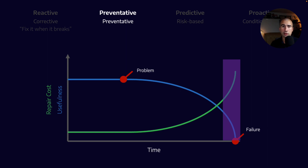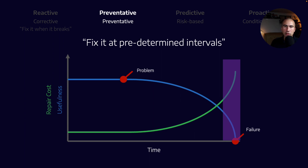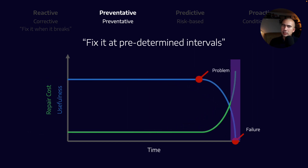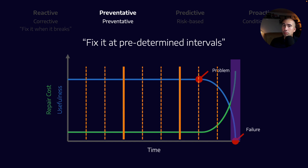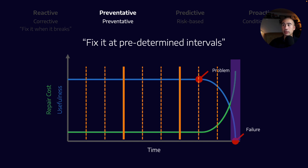Then we move on to preventative maintenance — the definition could be 'I fix it at predetermined intervals.' An example would be doing an inspection and an oil change on fixed kilometers or fixed oil hours. We're typically operating before the problem event, but also through it. The danger here is that there are such things as maintenance-induced failures. Maybe our asset would have performed perfectly well had we not touched it, but by opening it up we might install something incorrectly or introduce a contaminant that actually causes a failure.